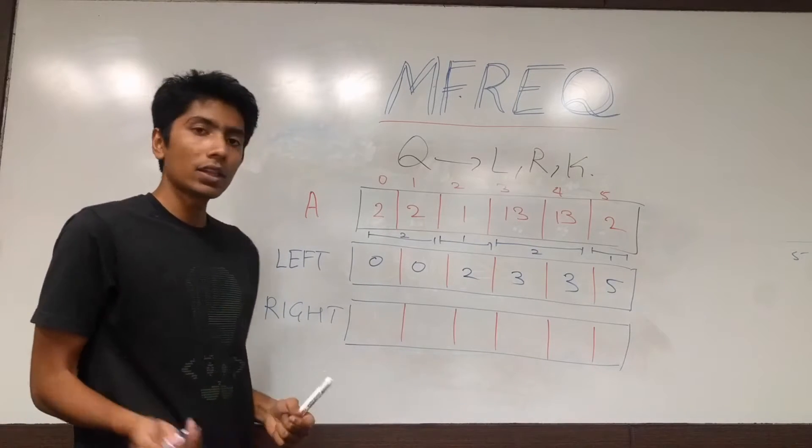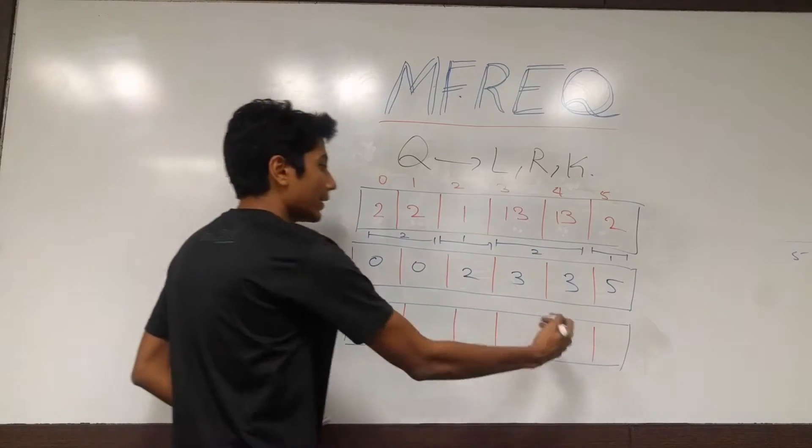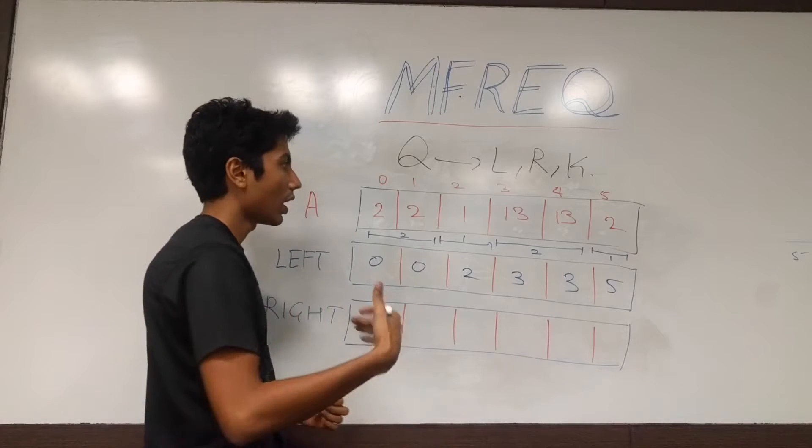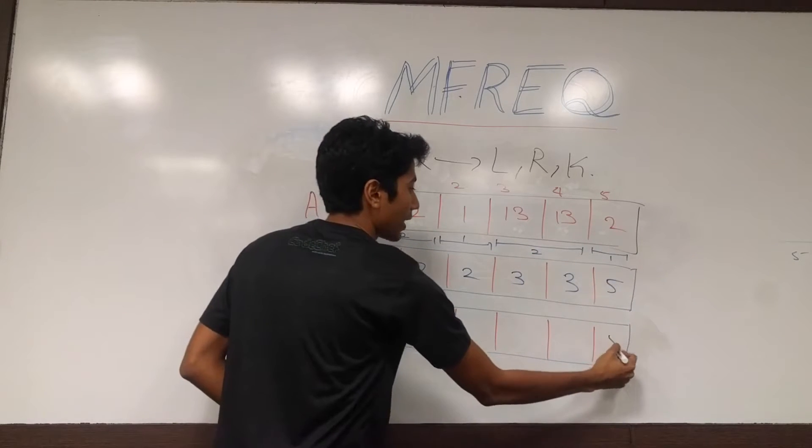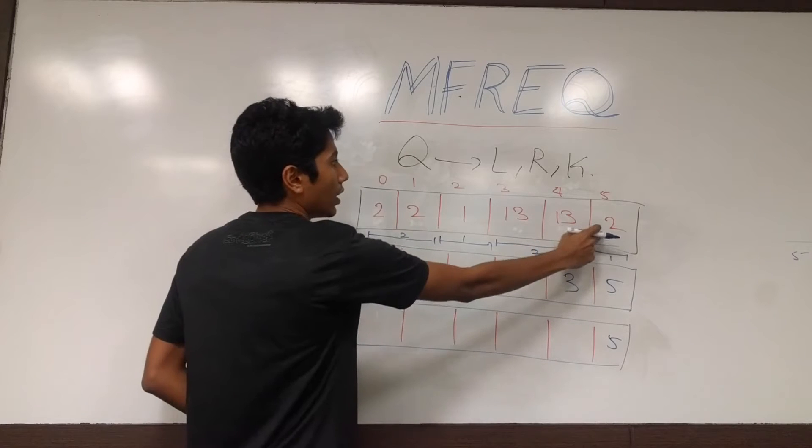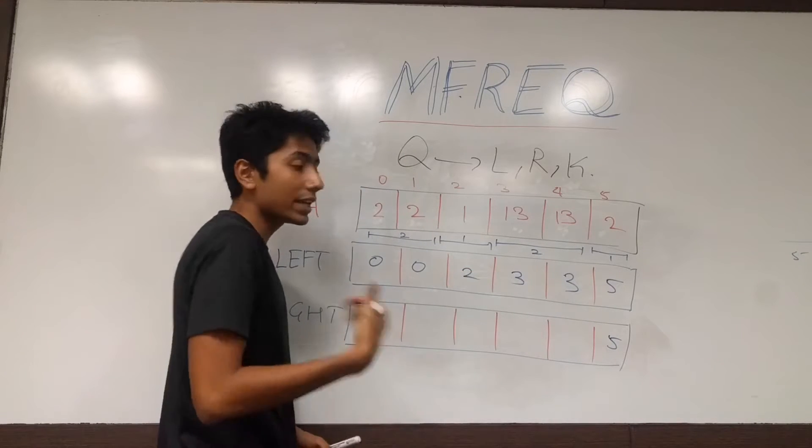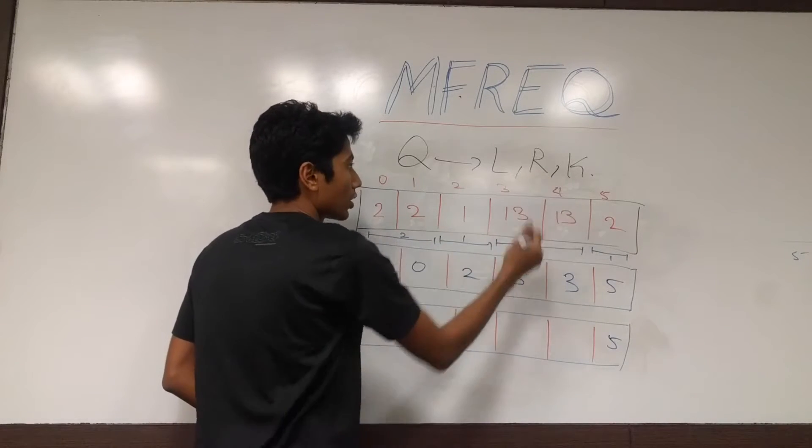The right array is done in the opposite manner. We go to the right. Is there anything after this element? No. So store that index, 5. Is there something after this element? Yes. Is it equal to it? No. So store its own index, 4.